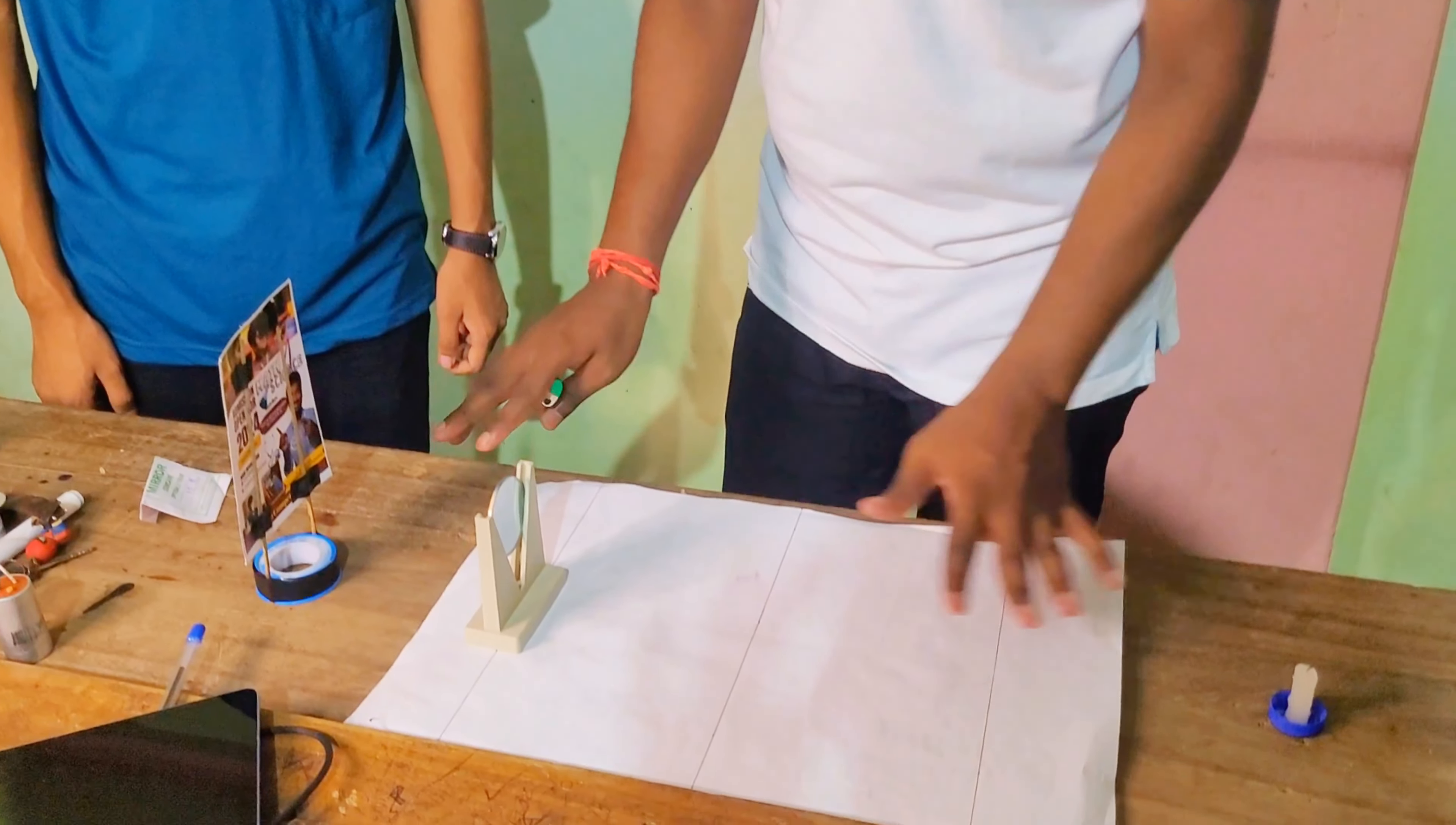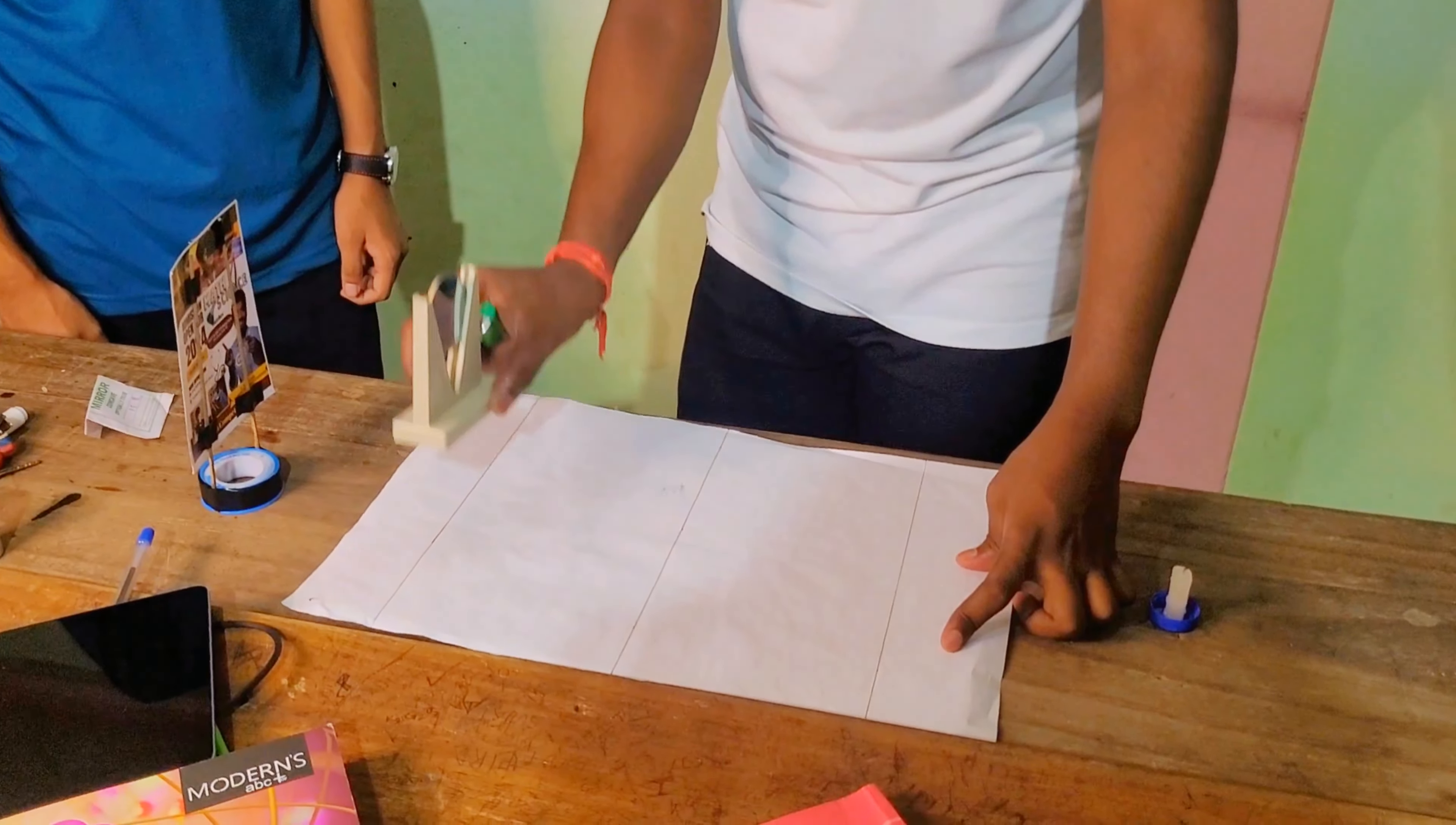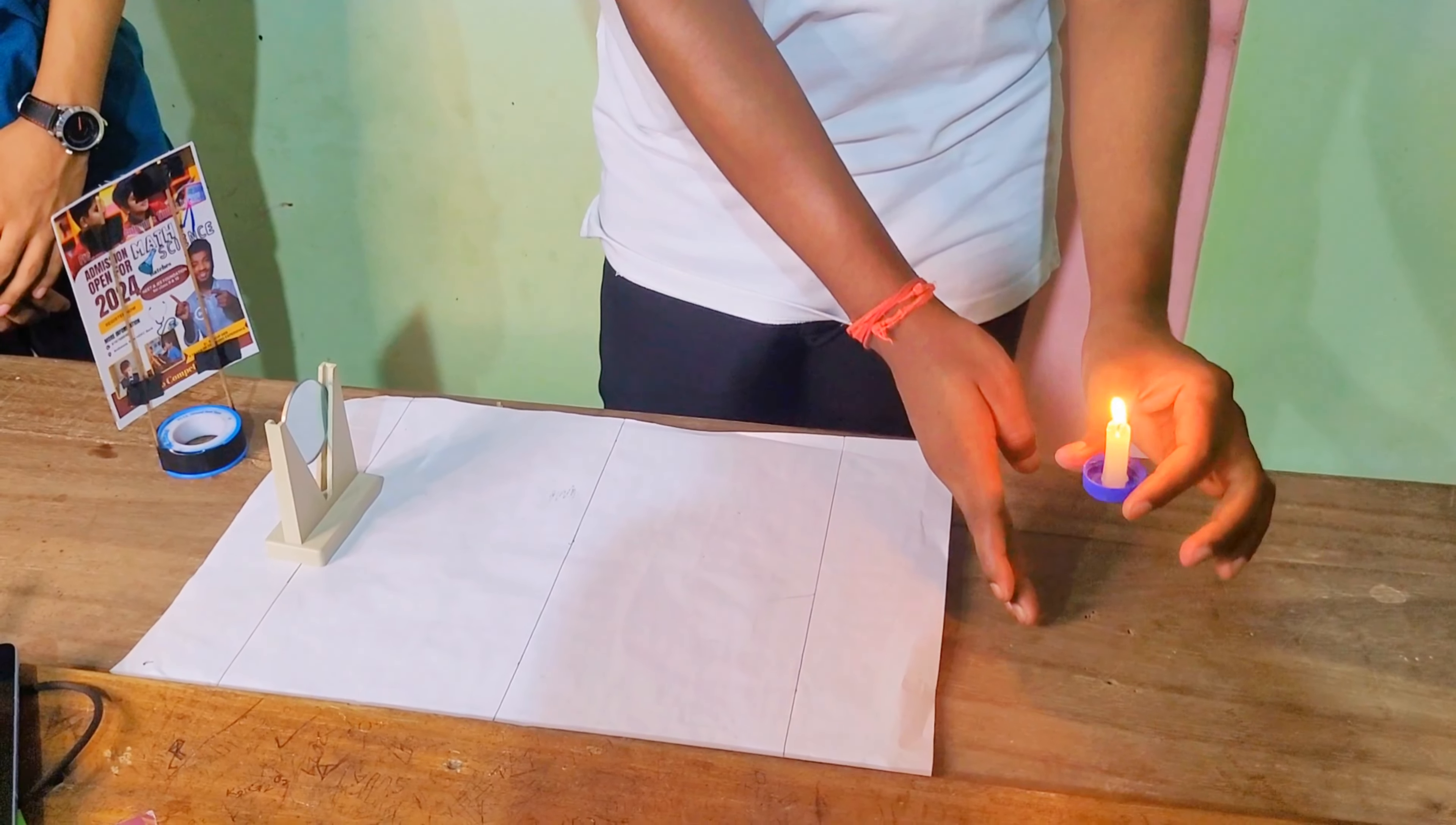So here we have a setup. In this setup, this line represents the pole line, this line represents the focus, and this line represents the center. So what are we going to do? We are going to work with this concave mirror. This is a screen, and we are going to use this candle as our object. We are going to place this object here, which is a point beyond C.